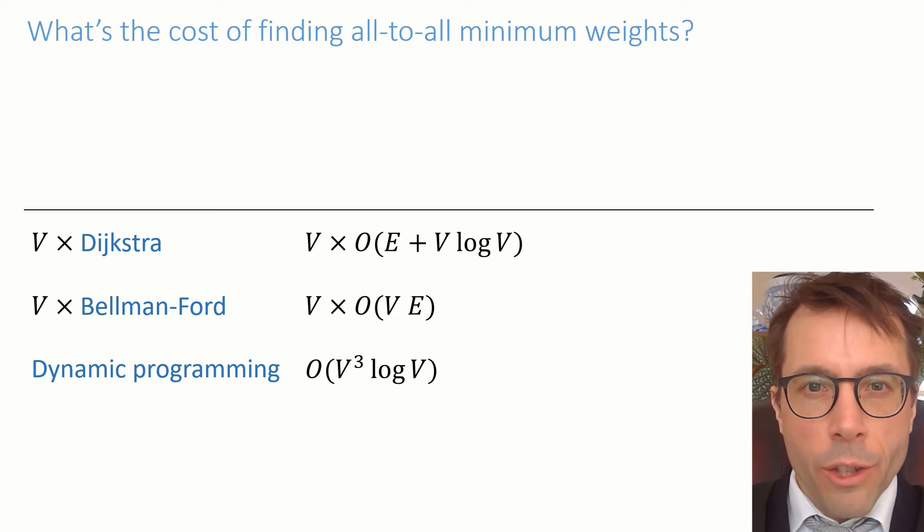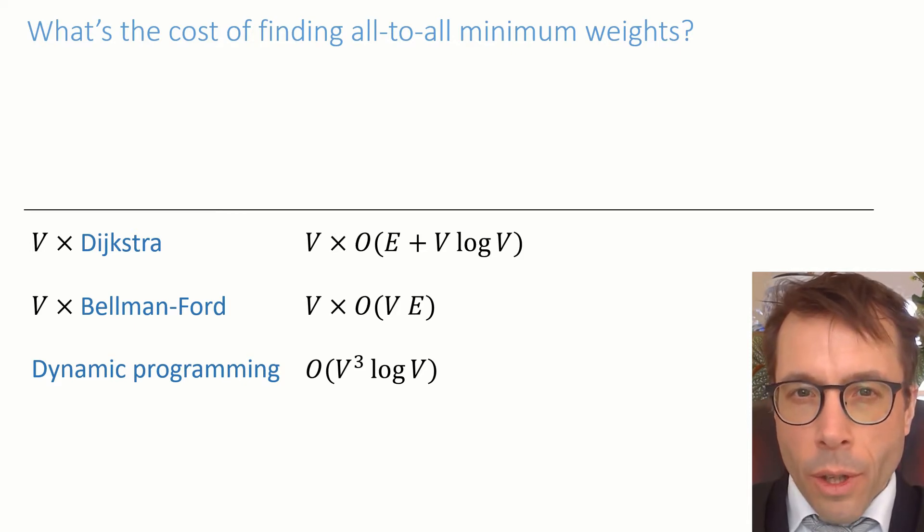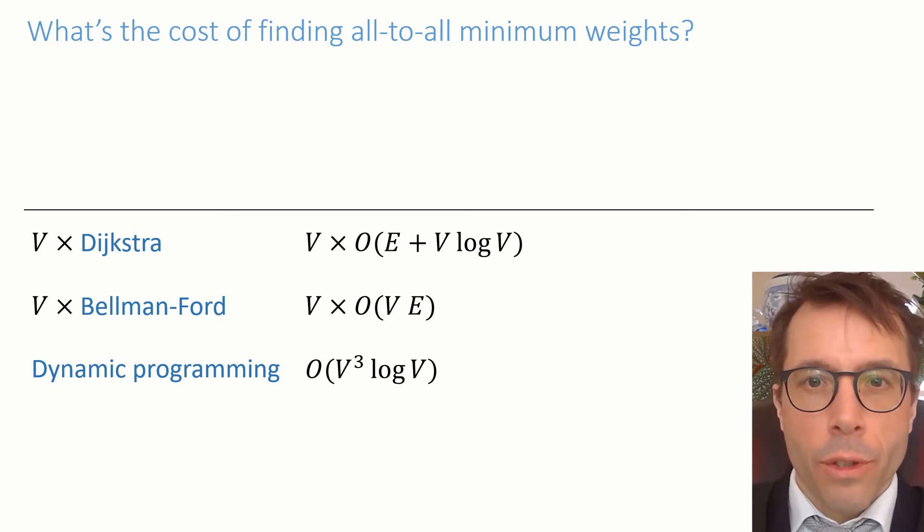What if there are some negative weight edges in the graph? Dijkstra's algorithm isn't safe. It may get stuck in an infinite loop. So we have two candidates: the Bellman-Ford algorithm, which again we could run V times once from each start vertex, or the dynamic programming method which computes all-to-all minimum weights in big O of V cube log V if we use the cunning matrix implementation that I mentioned in the last video.